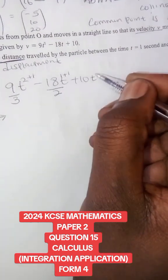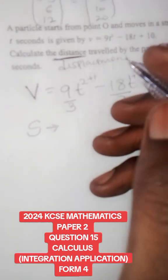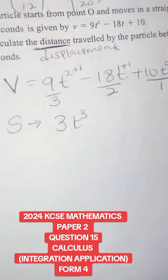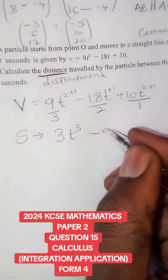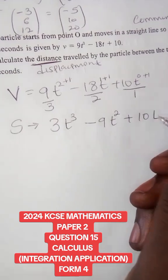Because here t is 0, 0 plus 1 is 1, you bring it here. This makes our new equation 3t³ - 9t² + 10t.